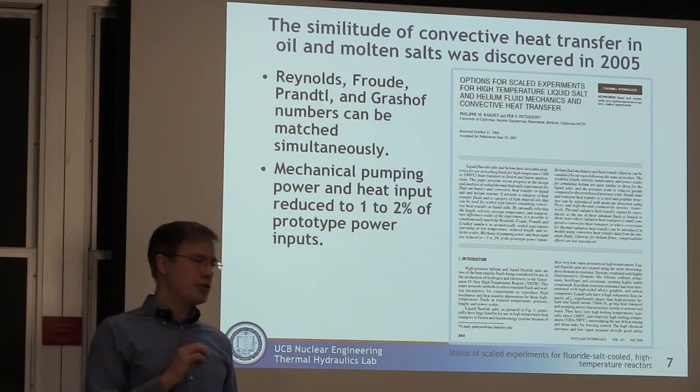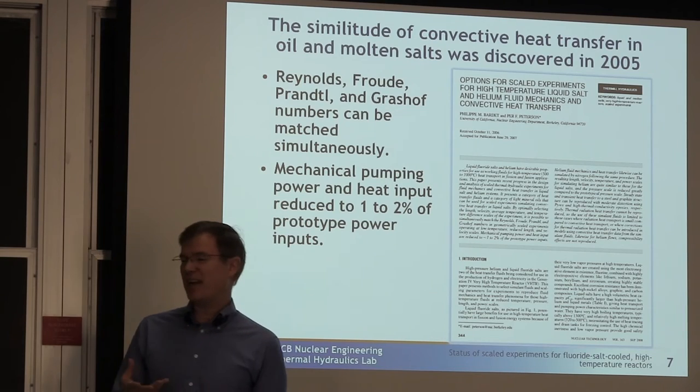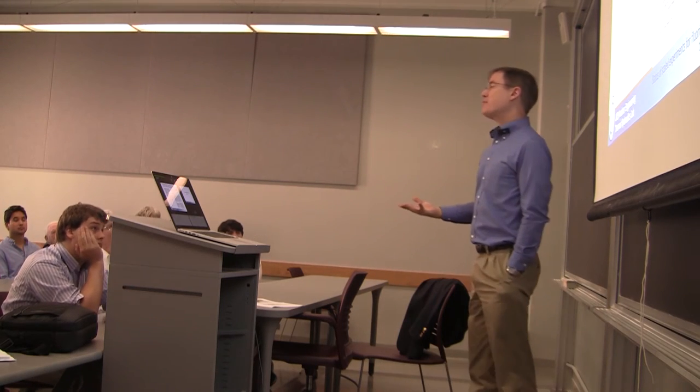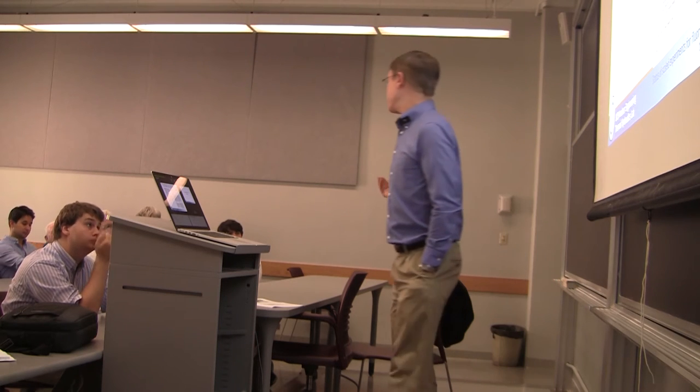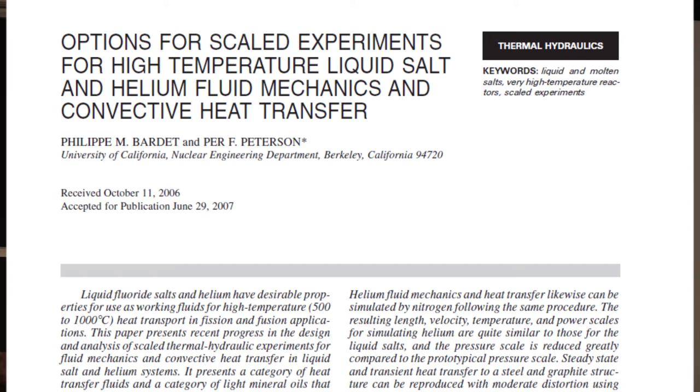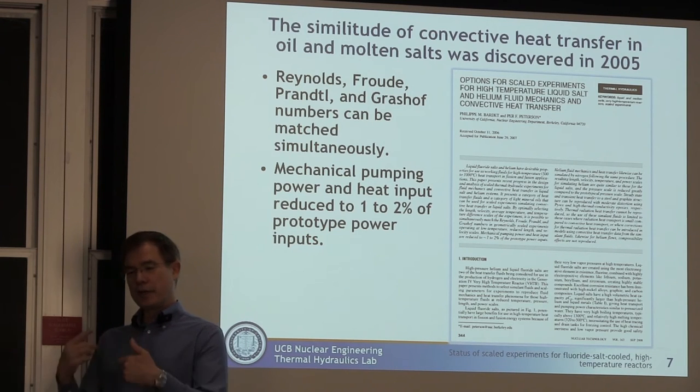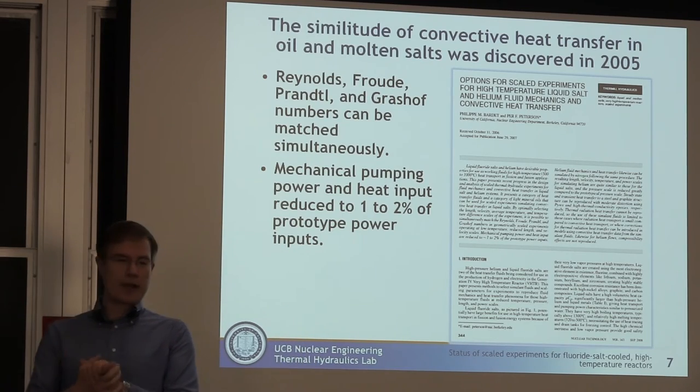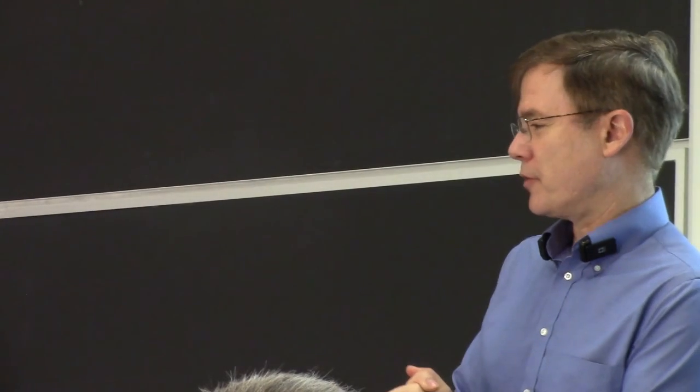This technique was developed right here at Berkeley. Nobody's done it. At moderate temperatures around 80 degrees centigrade, heat transfer oils like Dowtherm have the same Prandtl number as Flibe does at 650 degrees. If we scale to about 50% geometric scale and accelerate time, we can match Grashof, Reynolds, and Prandtl number, which means convective heat transfer can be the same.